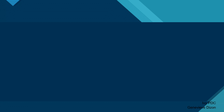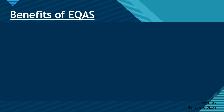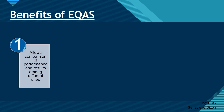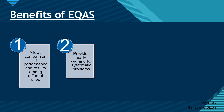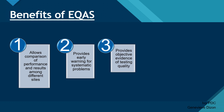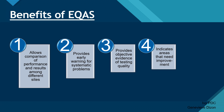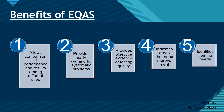The External Quality Assurance Scheme helps to assure customers such as physicians, patients, and health authorities that the laboratory can produce reliable results. The different benefits of EQAS are: first, it allows the comparison of performance and results among different laboratories; second, it provides an early warning for any systematic problems that may occur; third, it provides objective evidence of testing quality; fourth, it can indicate areas that might need improvement; and fifth, it identifies the training needs of the laboratory.